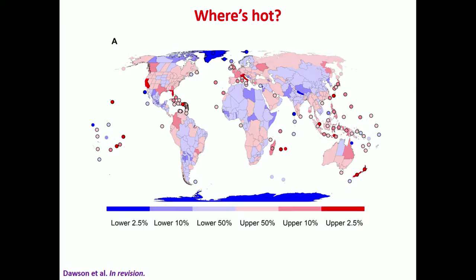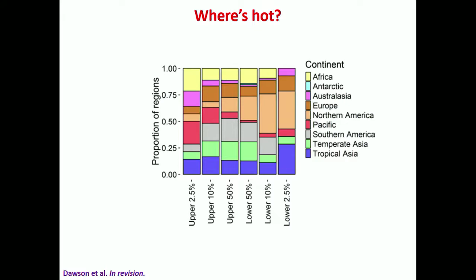Grouping species richness values into percentile groupings, we can see where is hot and where is not. Among the top 2.5% of regions: Hawaii, California, Florida, Italy, and New Zealand islands. About a quarter of those top regions occur in the Pacific. Cold spots in the lower 2.5% include Northern America and tropical Asia.